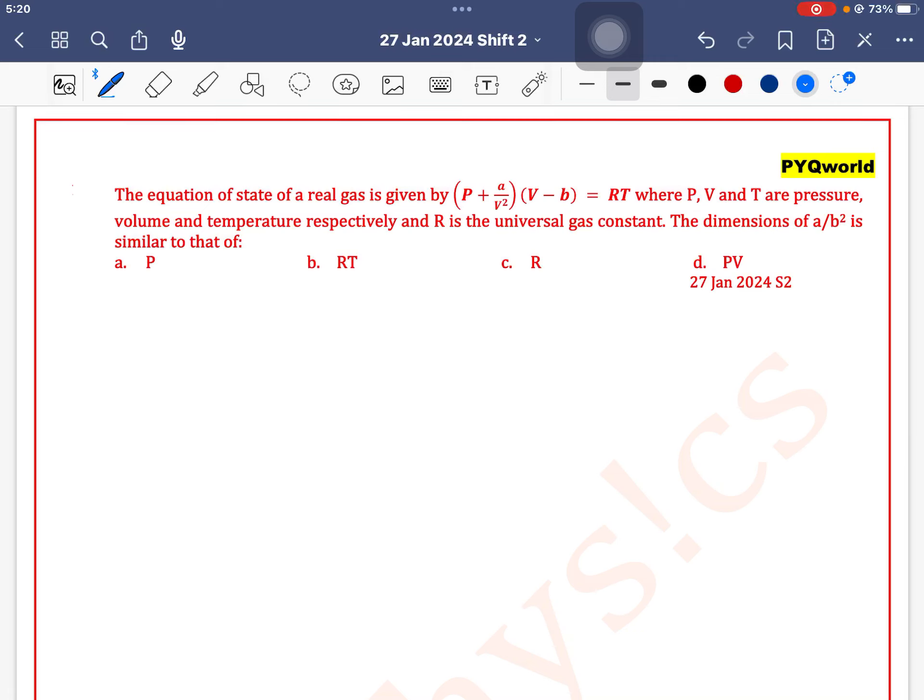The equation of state of real gas is given by P plus A by V square into V minus B is equal to RT where P, V, T are pressure, volume and temperature. The dimension of A by B square is, okay, let's find dimension of A by B square.